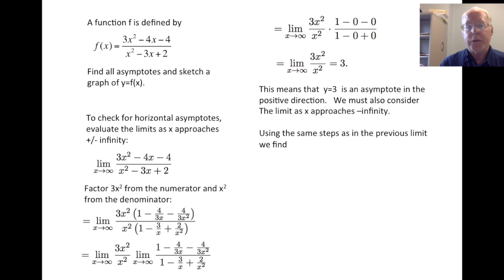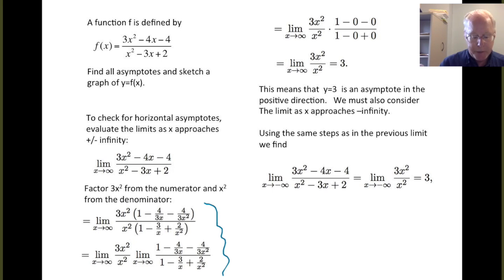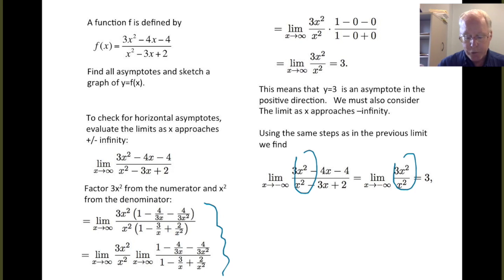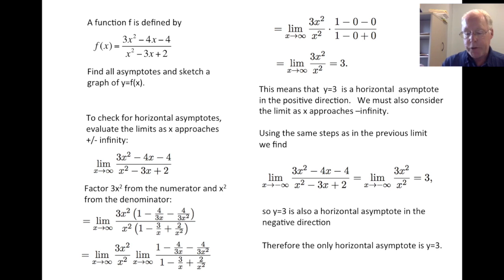The fact that this limit is 3 tells us y equals 3 is an asymptote, at least in the positive direction. We also have to consider the limit as x approaches minus infinity. Using the same steps, we find that limit also turns out to be 3. So y equals 3 is also a horizontal asymptote in the negative direction, and hence the only horizontal asymptote is y equals 3. Remember that and use it later when we sketch our graph.